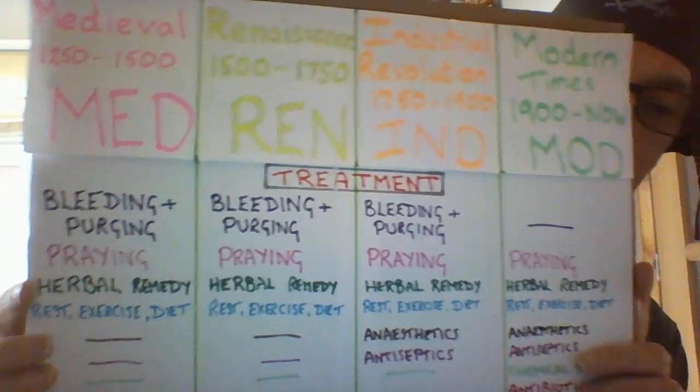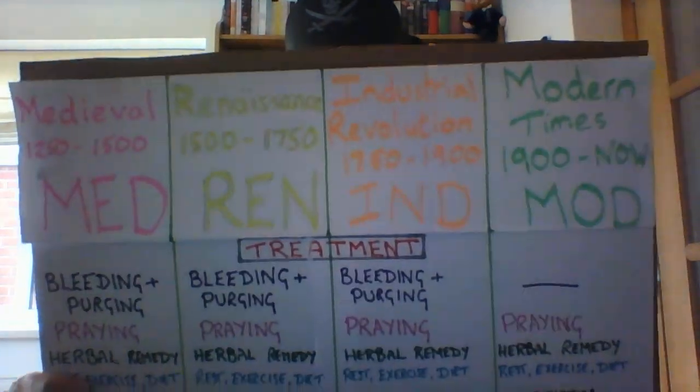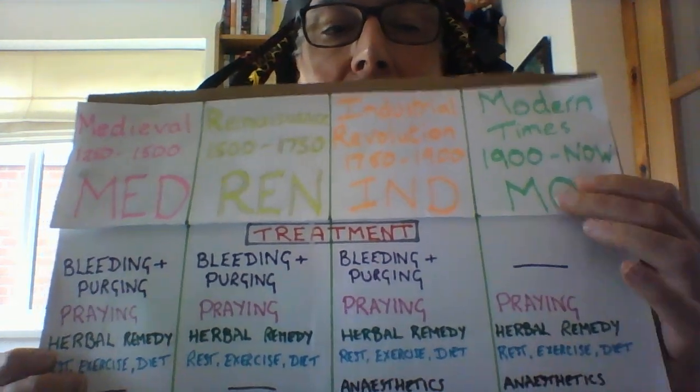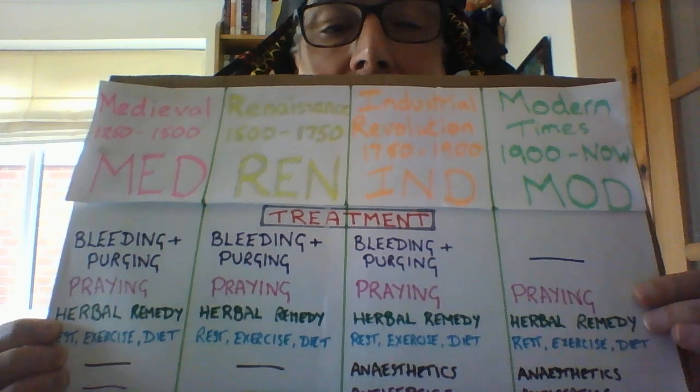The next treatment: rest, exercise and diet. Medieval times, renaissance, industrial revolution, modern times — doctors have always been very interested in this and said you've got to do this. Whether we do exercise or watch our diet is a different thing, but the treatment is there. Rest, exercise and diet are important parts of our treatments and have been throughout the entire medicine course. Most of what we've seen so far hasn't really changed very much — a little bit here with bleeding and purging stopping, but the rest have all carried on. Now we're going to get to the changes.